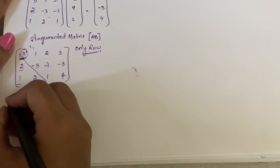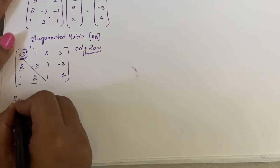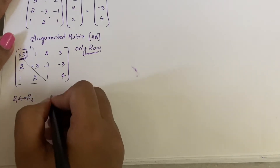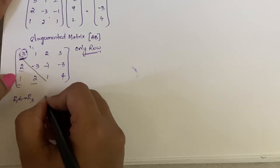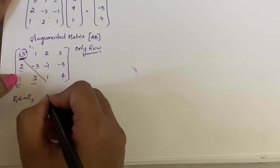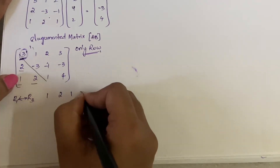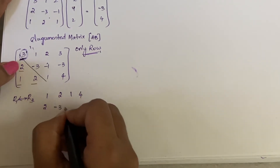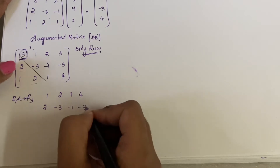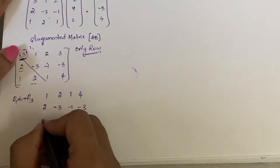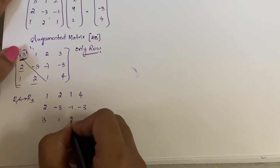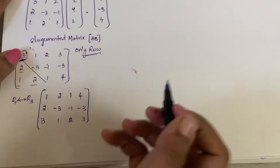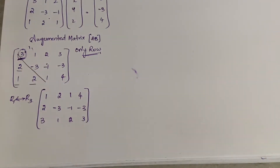Let us apply the operation: R1 and R3 are interchanged. So R1 will become the old R3, which is [1, 2, 1 | 4]. R2 remains as it is: [2, -3, -1 | -3]. And R3 becomes the old R1: [3, 1, 2 | 3].